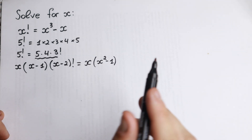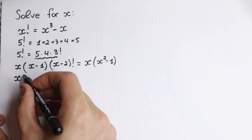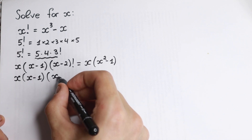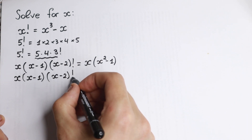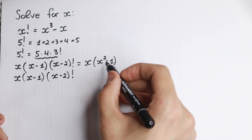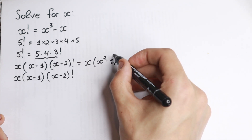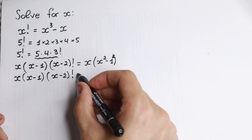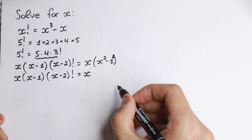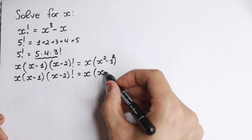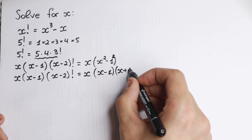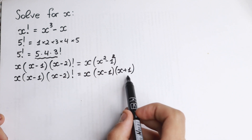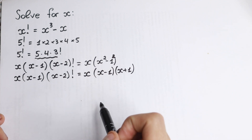Now here is a really interesting moment. The left-hand side is x times (x minus 1) times (x minus 2) factorial. On the right we have the difference of squares formula: a squared minus b squared equals (a minus b)(a plus b), giving us x times (x minus 1) times (x plus 1).